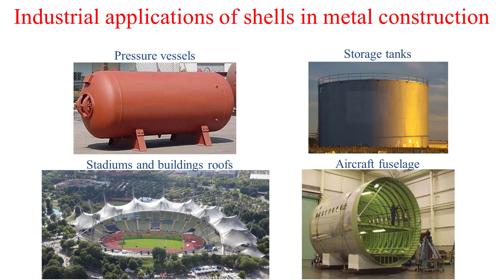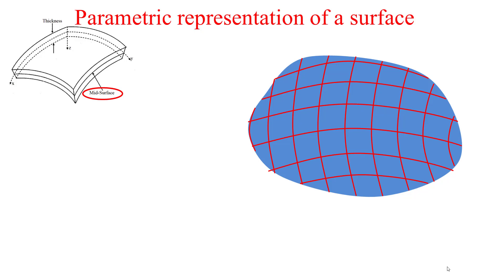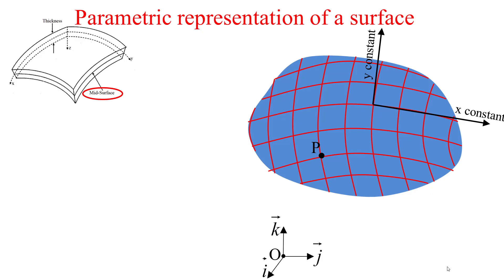Now I'll talk about the parametric representation of a surface. The shell is represented by its curved mid surface, depicted in blue. We have grid lines representing the parameter curves — the x-constant parameter curves and the y-constant parameter curves. A point P is the intersection of an x-constant and a y-constant parameter curve.